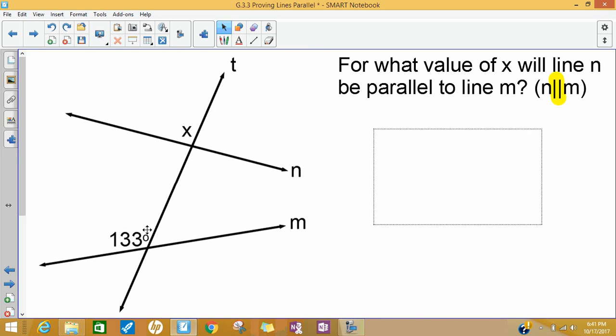So x is 133. Those are two corresponding angles. One's inside, one's outside, but they're both in the groups of four angles. They're both in the top left. When two lines are parallel, corresponding angles are supposed to be congruent.